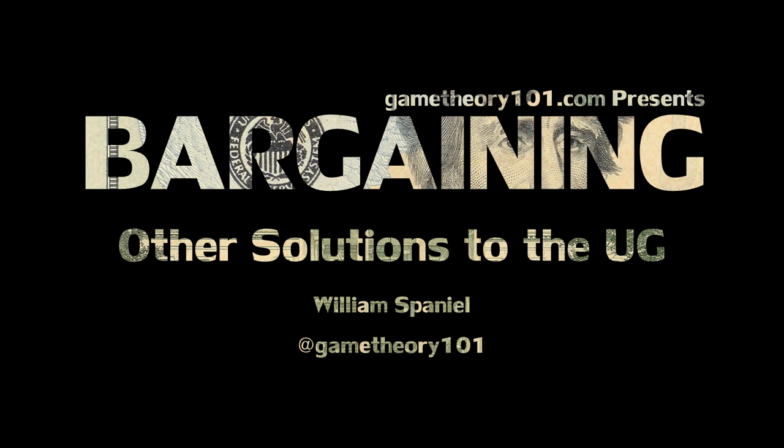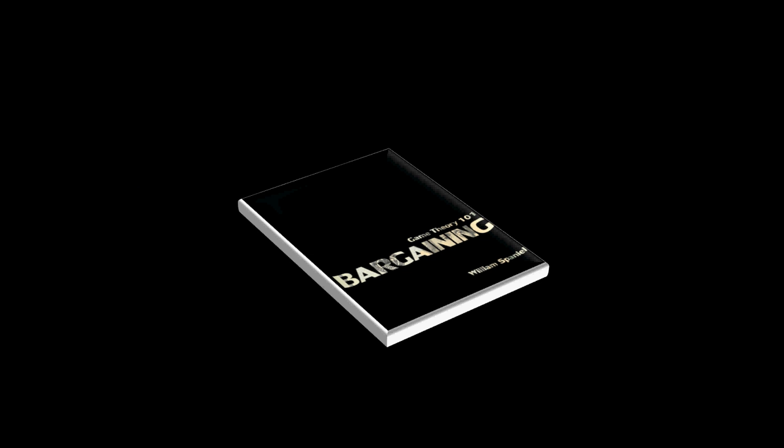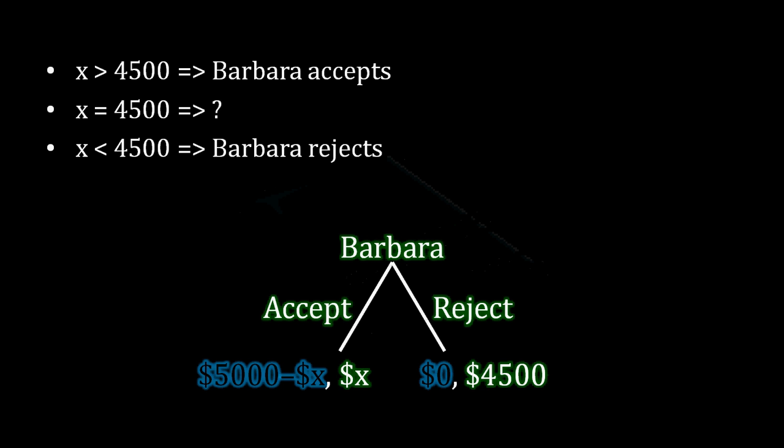But if you're still here, this is something that I cover in the appendix of chapter 2 of Game Theory 101, Bargaining. Now remember back to last time, we had broken down Barbara's decision as follows. We know that if Albert offers her greater than $4,500, then Barbara has to accept. That's because she values the car at $4,500. So if Albert is offering her more than that, of course Barbara is going to accept.